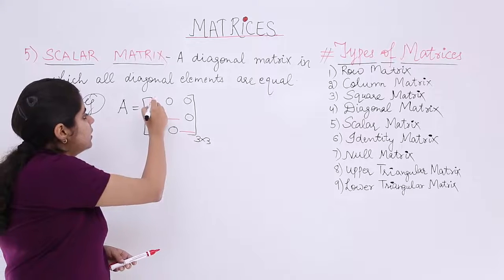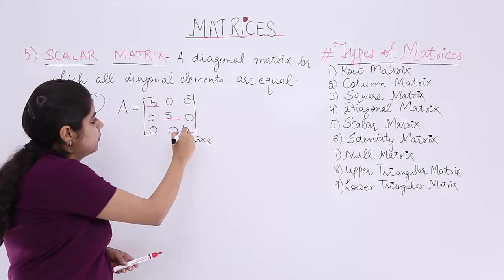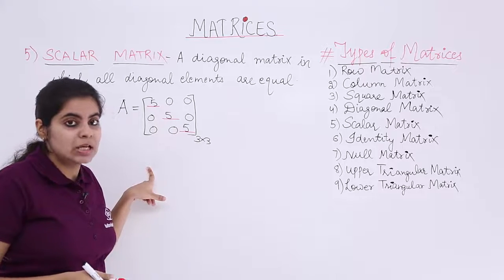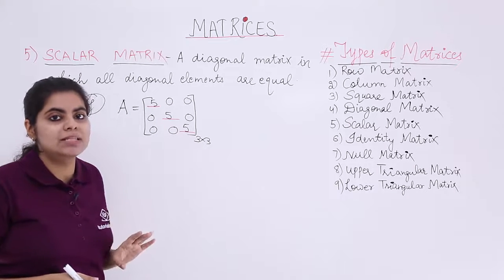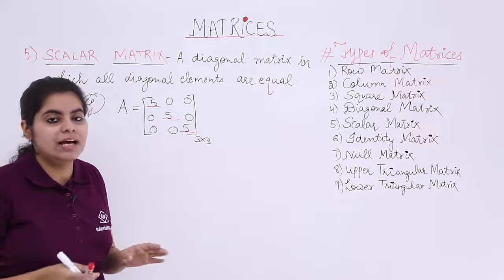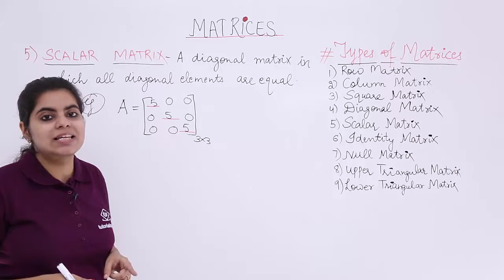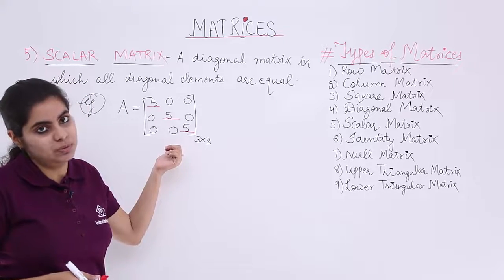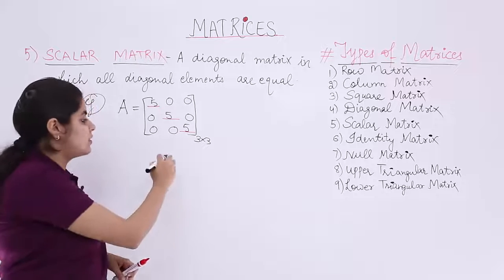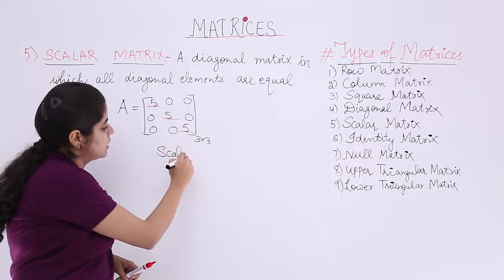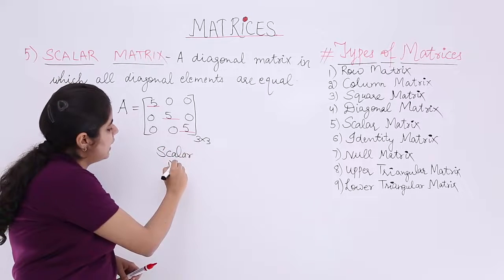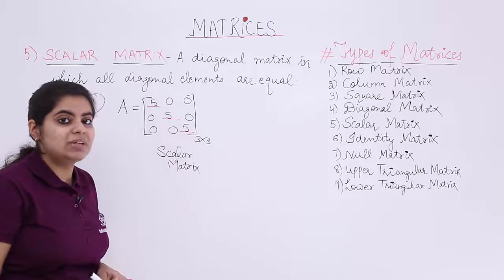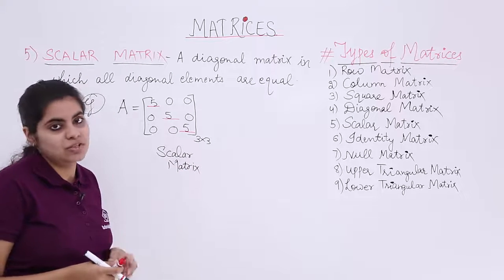If I write 5 everywhere on the diagonal, it is a diagonal matrix because only diagonal elements are present and the others are 0. And yes, it is a scalar matrix also because the diagonal elements are equal. So this classification of a matrix is a scalar matrix, and if I write a scalar matrix, that automatically means it is a diagonal matrix also.